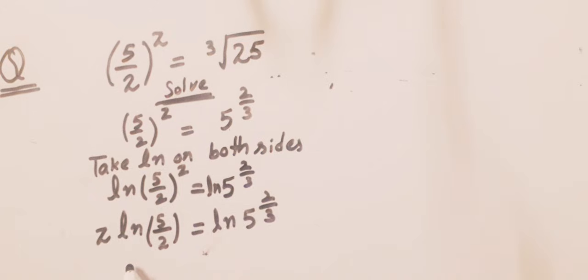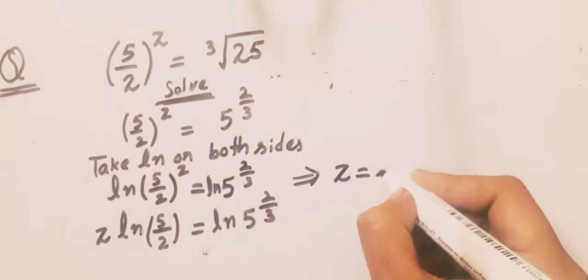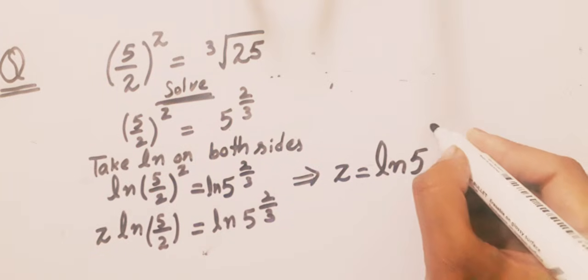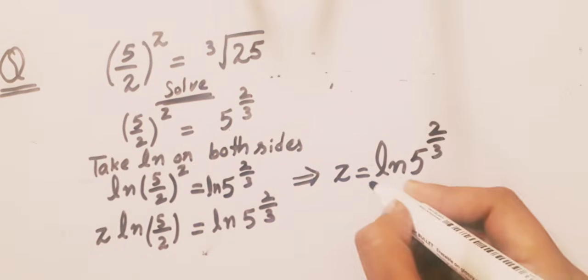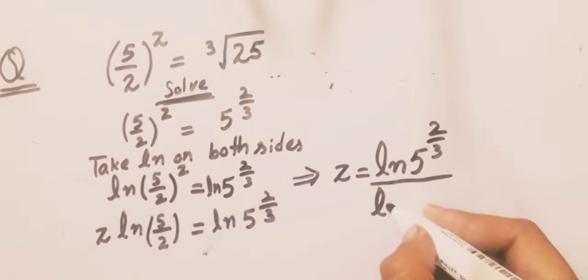Now, the value of z will be [ln(5)·(2/3)] / ln(5/2).